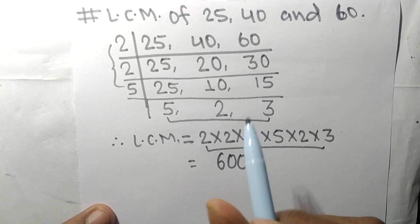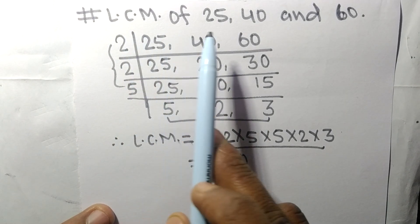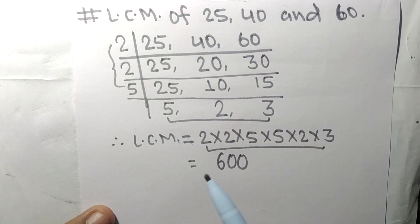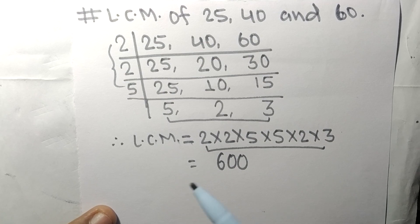So 600 is the LCM of 25, 40 and 60. So this is much for today and thanks for watching.